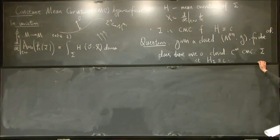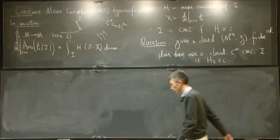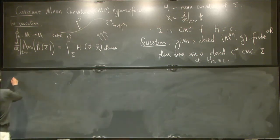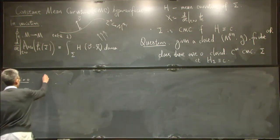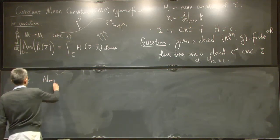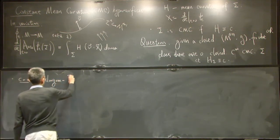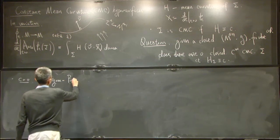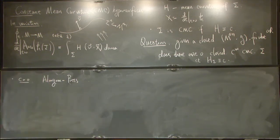The known results before we think about this problem: if c is 0, so this CMC reduces to a minimal hypersurface, and the existence was the famous theory. So the solution is yes, there always exists a closed, smooth, embedded minimal hypersurface.